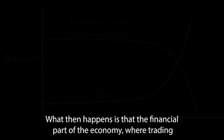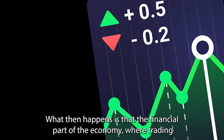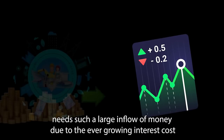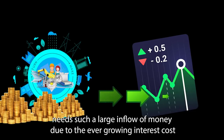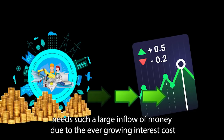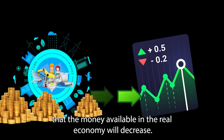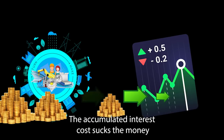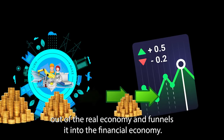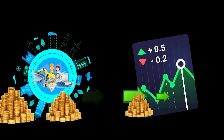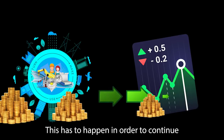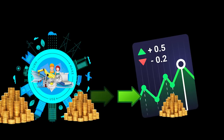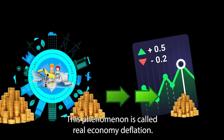What then happens is that the financial part of the economy, where trading in stocks, currencies and other debt-based financial instruments are conducted, needs such a large inflow of money, due to the ever-growing interest cost, that the money available in the real economy will decrease. The accumulated interest cost sucks the money out of the real economy and funnels it into the financial economy, in order to continue supporting the interest cost for previously created money. This phenomenon is called real economy deflation.